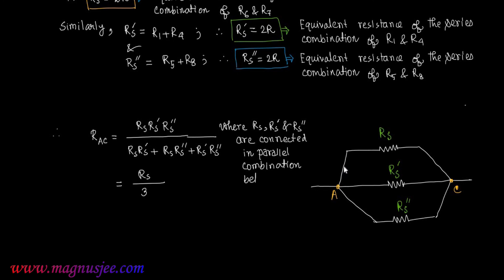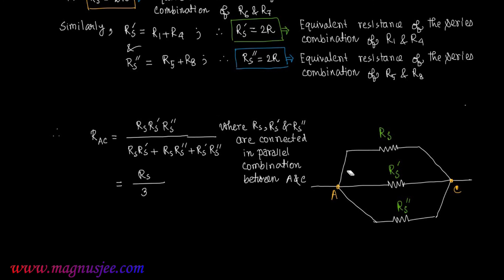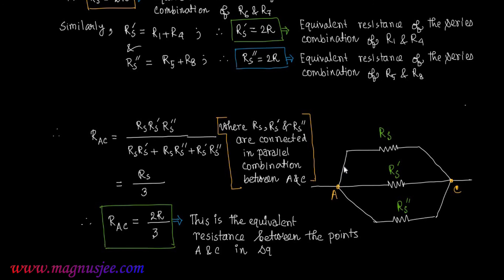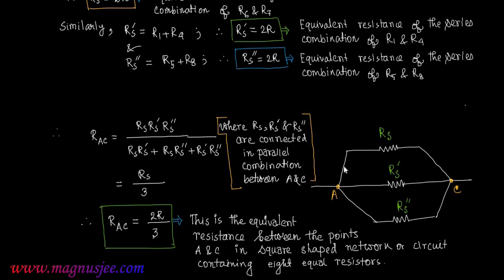Since Rs, Rs', and Rs'' are connected in parallel and are all equal to 2R, the equivalent resistance simplifies to Rs divided by 3, which equals 2R divided by 3. Therefore R_ac equals 2R/3. This is the equivalent resistance between the two points A and C in a square-shaped network containing eight equal resistors.